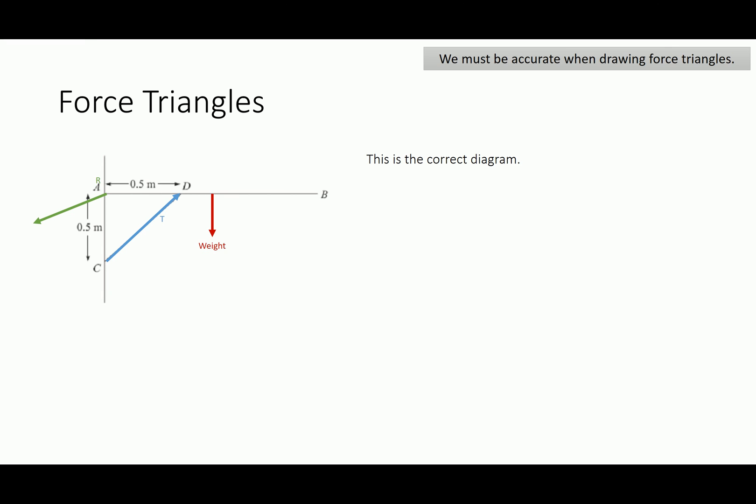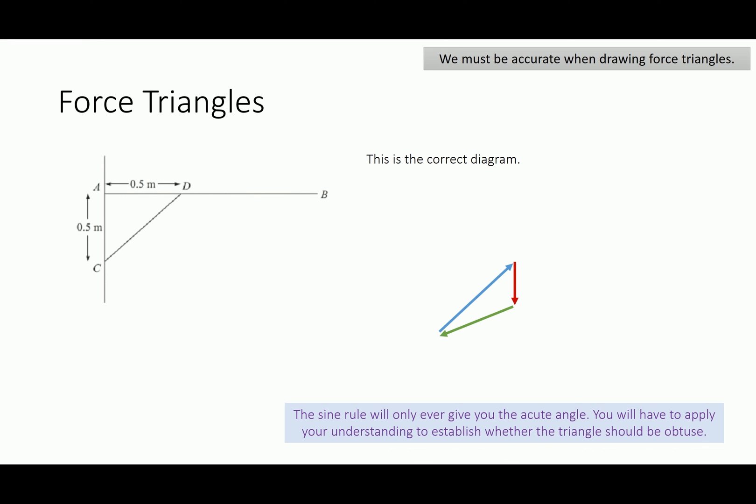So, this is how the diagram should be drawn correctly, and if we're to use a force triangle, the idea is that each of the forces will join together end to end to form this perfect little triangle. It then allows us to use trigonometry or the sine rule, cosine rule, etc. to find out various missing forces or angles.